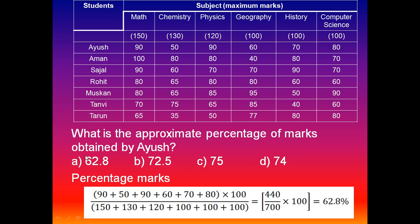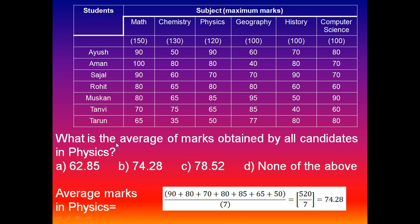Next question: what is the average marks obtained by all candidates in Physics? To calculate, we take the Physics column: 90 plus 80 plus 70 plus 80 plus 85 plus 65 plus 50, divided by 7 students. That gives us 520 by 7, so our answer is approximately 74.28. The option is B.